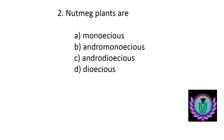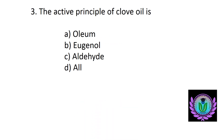Nutpipe plants are — option A: monoecious, B: andromonoecious, C: androdiocious, D: dioecious. The answer is option D, dioecious.